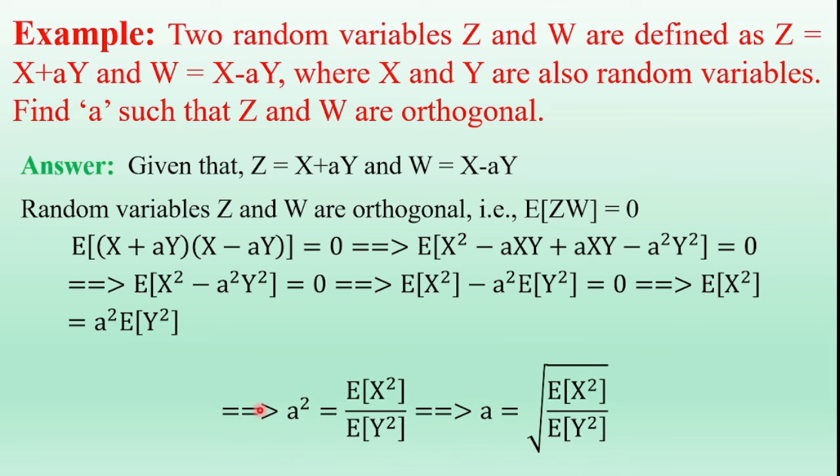Therefore, a square equals expectation of X square by expectation of Y square, and the constant value a equals square root of expectation of X square by expectation of Y square.